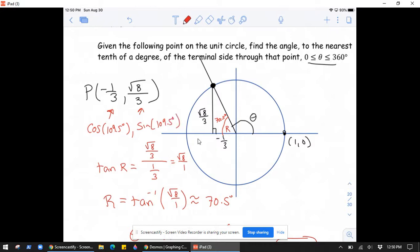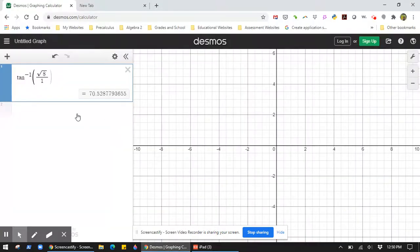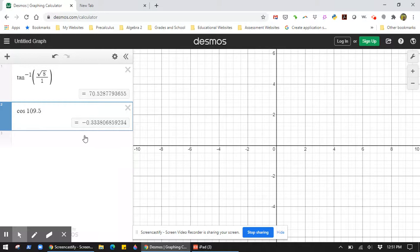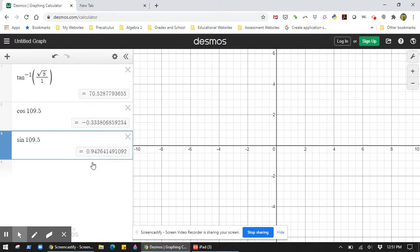Let's just check and see that that's what we get. So, if I do the cosine of 109.5 degrees, I get pretty close to negative 1/3. Obviously, it's not exact because we rounded.